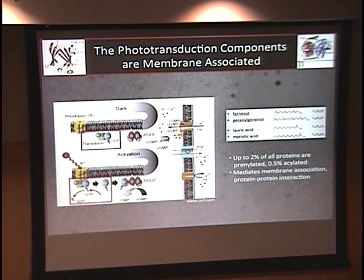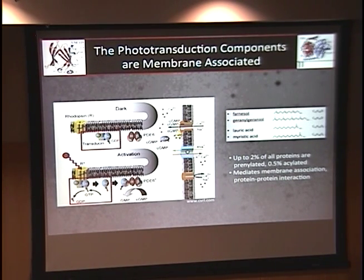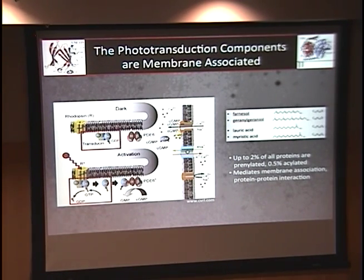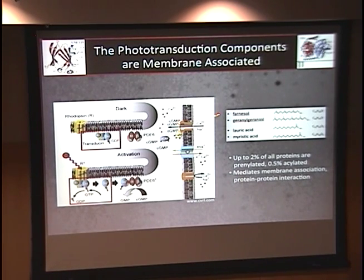A lot of these phototransduction components are membrane-associated. I want you to focus on transducin. In the dark, transducin consists as a heterotrimer with an alpha subunit bound to GDP and a beta and gamma subunit. In response to light, rhodopsin is activated, causing transducin to dissociate into an alpha subunit and a beta-gamma subunit, swapping GDP for GTP. Most of these proteins are membrane-associated via prenyl moieties — either farnesyl or geranylgeranyl — or acyl moieties, either lauroyl or myristoyl. Transducin alpha has an acyl moiety; the gamma subunit is prenylated.